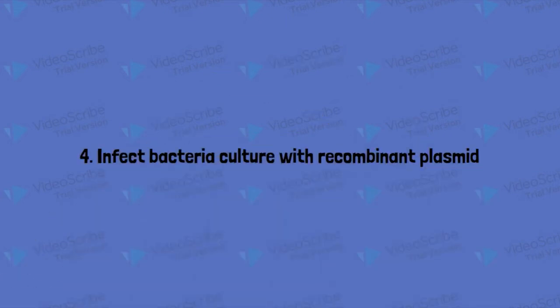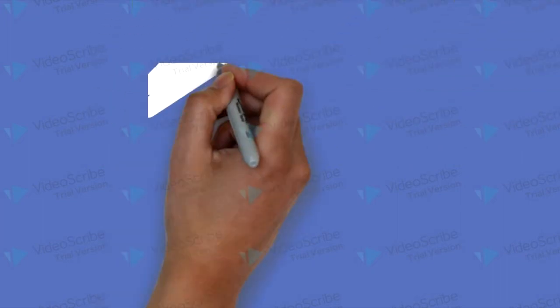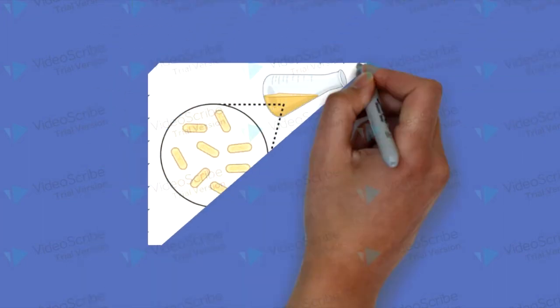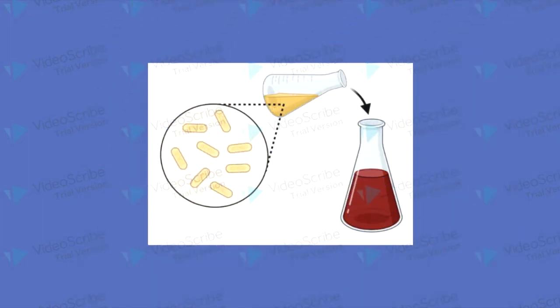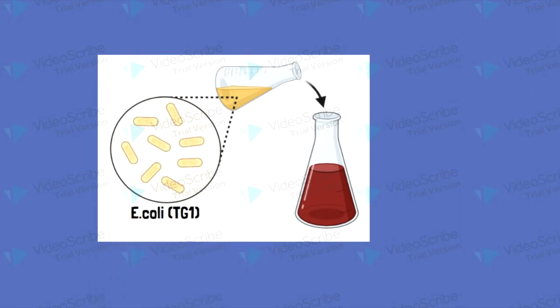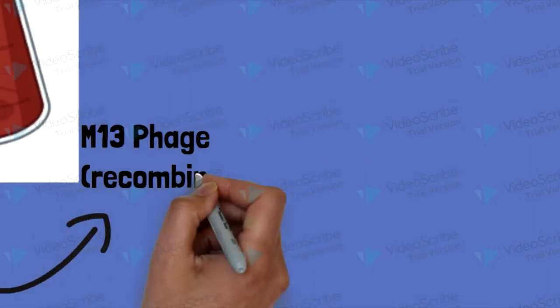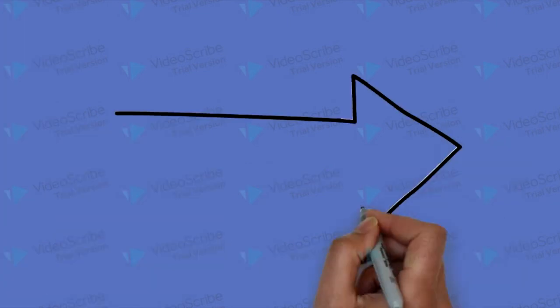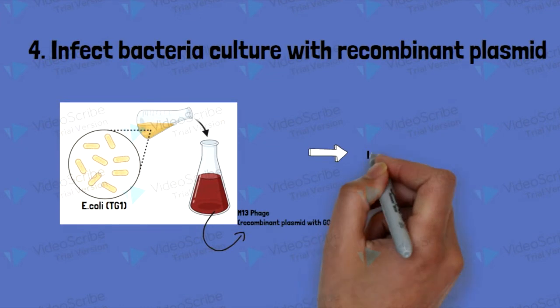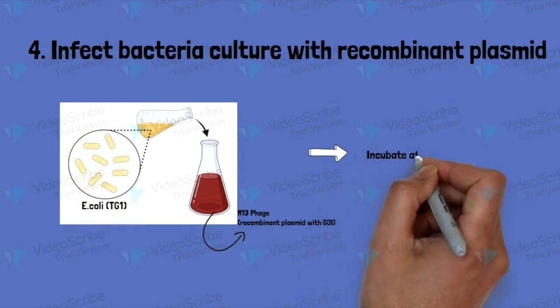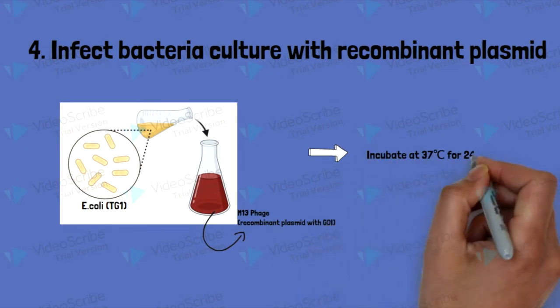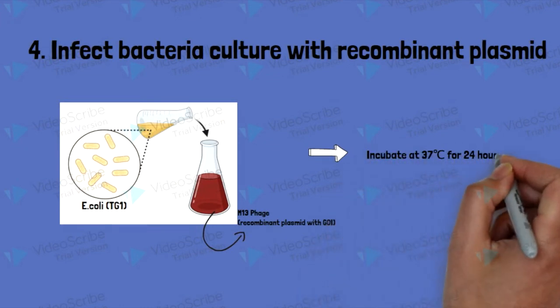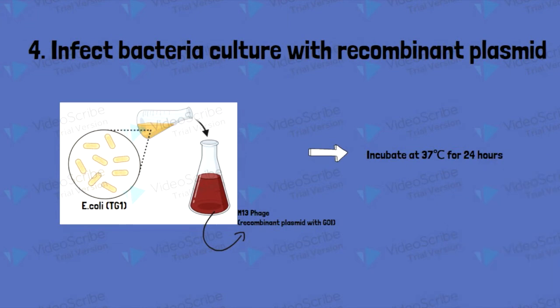Moving on to the next step: after growing a culture of E. coli strain TG1, infect the culture by incubating the bacterial culture with the recombinant plasmid which contains the gene of interest and M13 phage. After incubation at 37 degrees Celsius for 24 hours, the bacterial culture should be well infected with the recombinant plasmid.